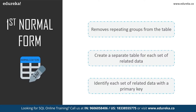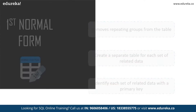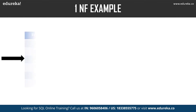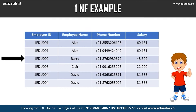The first normal form performs the following functions: it removes repeating groups from the table, creates a separate table for each set of related data, and identifies each set of related data with a primary key. In the employee table with columns employee ID, employee name, phone number, and salary, the phone number column has two values — violating the first normal form. After applying 1NF, each row is distinct and no cell holds multiple values, achieving atomicity.